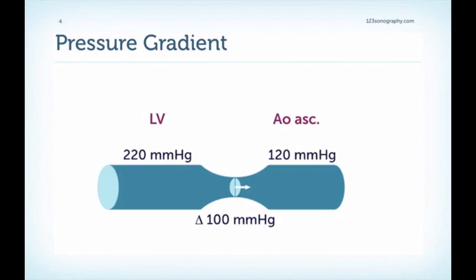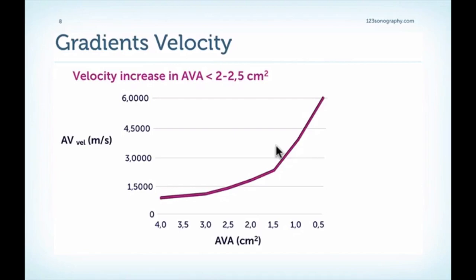In heart catheterization or with Doppler we can measure the pressure gradient or pressure difference between the left ventricle and the ascending aorta. Note the high pressure the left ventricle has to achieve to produce a normal blood pressure in the ascending aorta in severe aortic stenosis. In Doppler we measure the aortic valve velocity, and there is a rapid increase in aortic velocity once the aortic valve area gets below 2 to 2.5 square centimeters, with an exponential increase as the valve gets smaller.